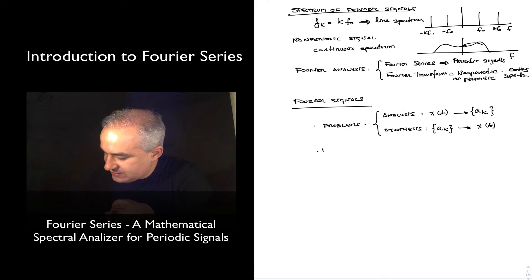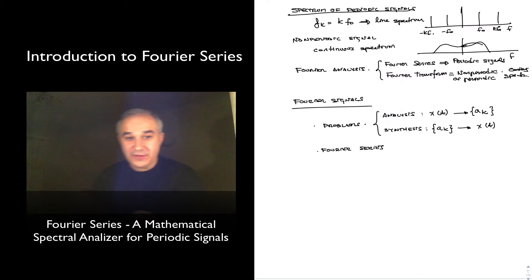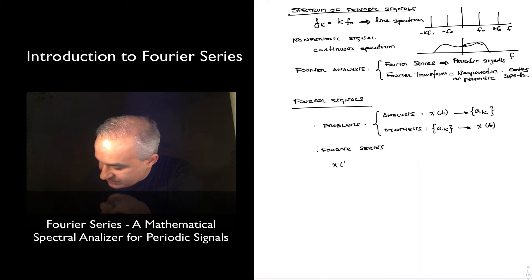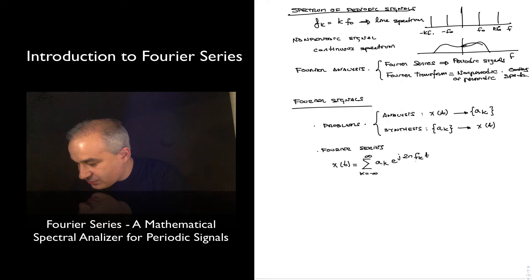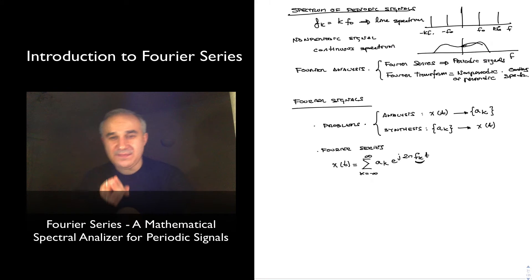So the Fourier series equation, which remember it is for periodic signals, we go with x of t equals sum from k equals minus infinity to infinity of a_k e to the j 2 pi f_k t. This was more general than the Fourier series because we didn't impose any constraints on these frequencies, right? So they work for any signal that has a line spectra, periodic or quasi-periodic signals.